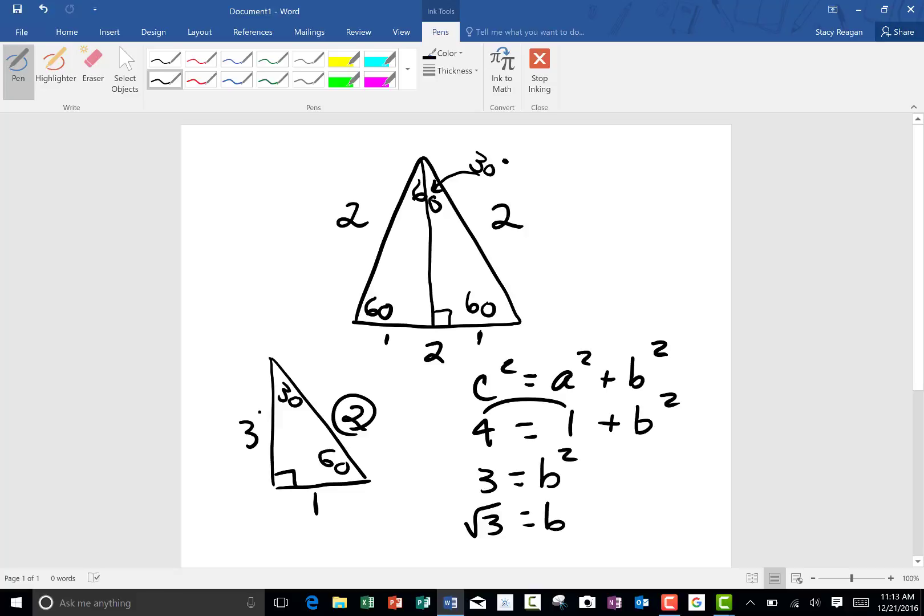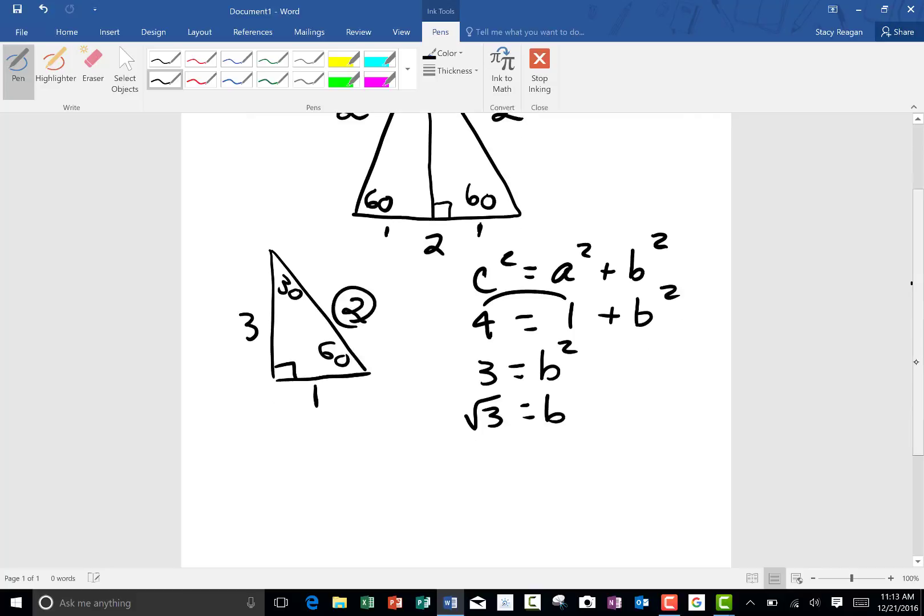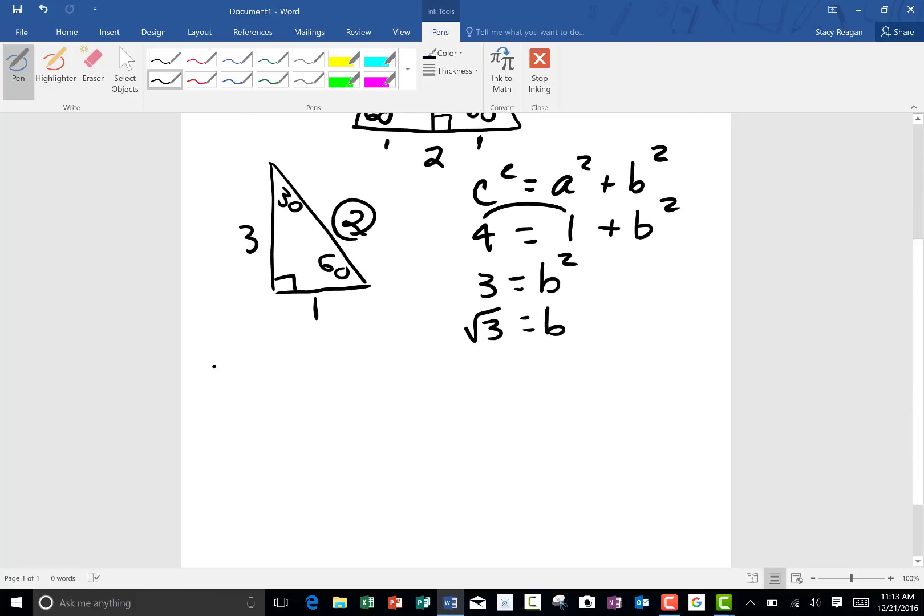So now that we actually have a labeled triangle with all the sides labeled, we can find sine, cosine, and tangent of 30 degrees because we know all the parts of the triangle.